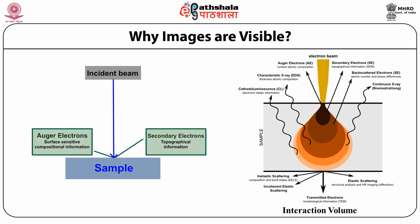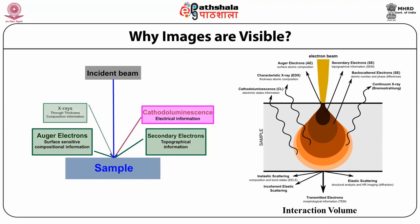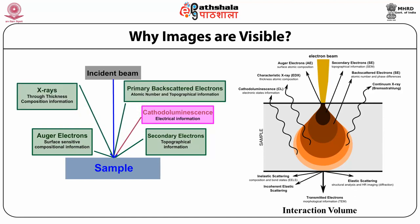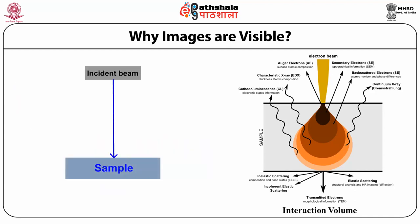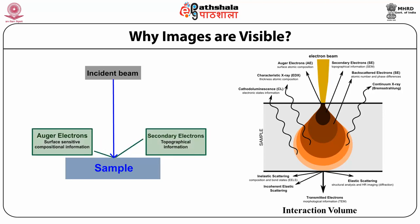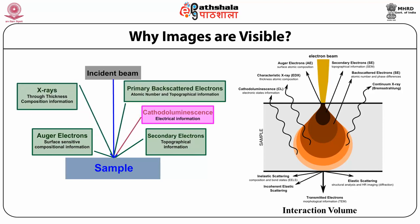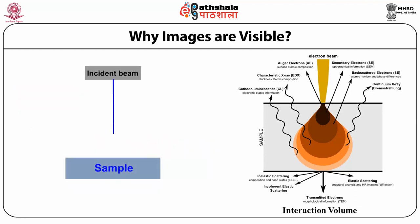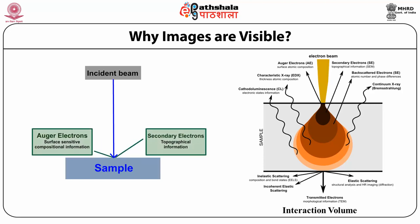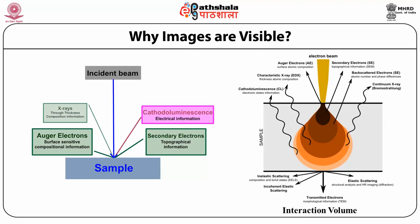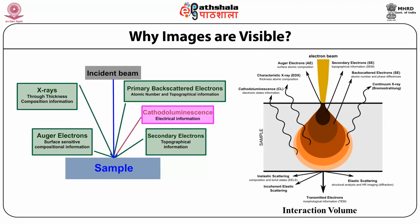Electronic amplifiers are used to amplify the signals, which are displayed as variations in brightness on a computer monitor or, for vintage models, on a cathode ray tube. Each pixel of the computer video memory is synchronized with the position of the beam on the specimen, and the resulting image is a distribution map of signal intensity emitted from the scanned area. In older microscopes, the image may be captured by photography from a high-resolution cathode ray tube, but in modern machines they are digitized and saved as a digital image.